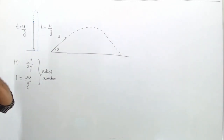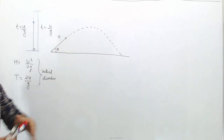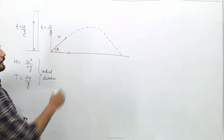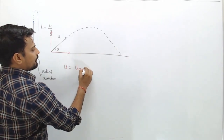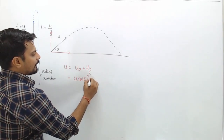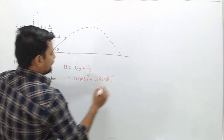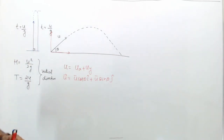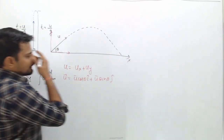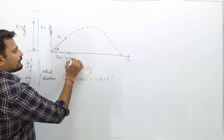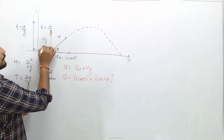Now this initial velocity u has two components: one along the x-axis and one along the y-axis. So u can be written as u_x + u_y, or in vector form as u·cos(θ) î + u·sin(θ) ĵ. The horizontal component is u·cos(θ) and the vertical component is u·sin(θ).